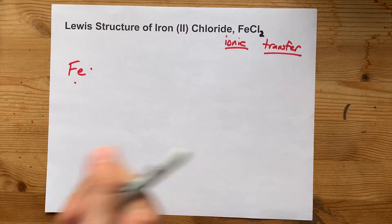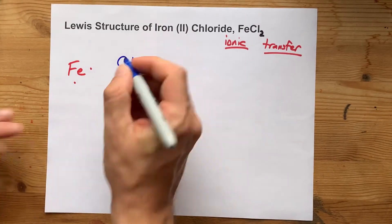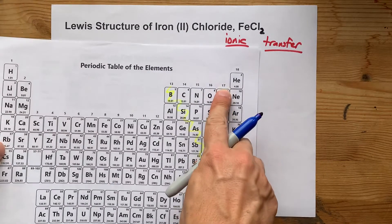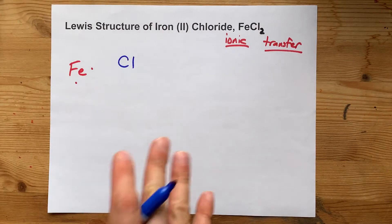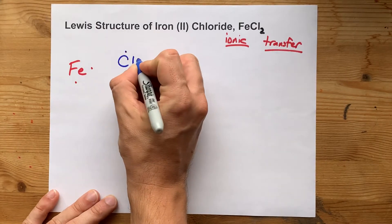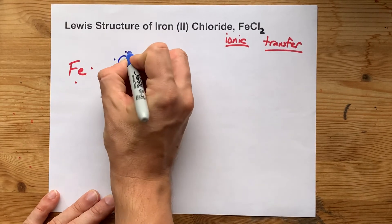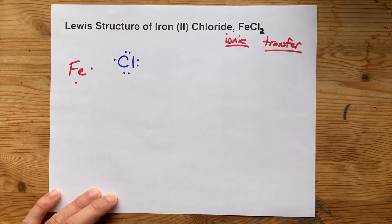Now I'm also going to draw a chlorine atom. Chlorine comes from group 17 on the periodic table. It brings 7 valence electrons with it. 1, 2, 3, 4, 5, 6, 7 valence electrons.